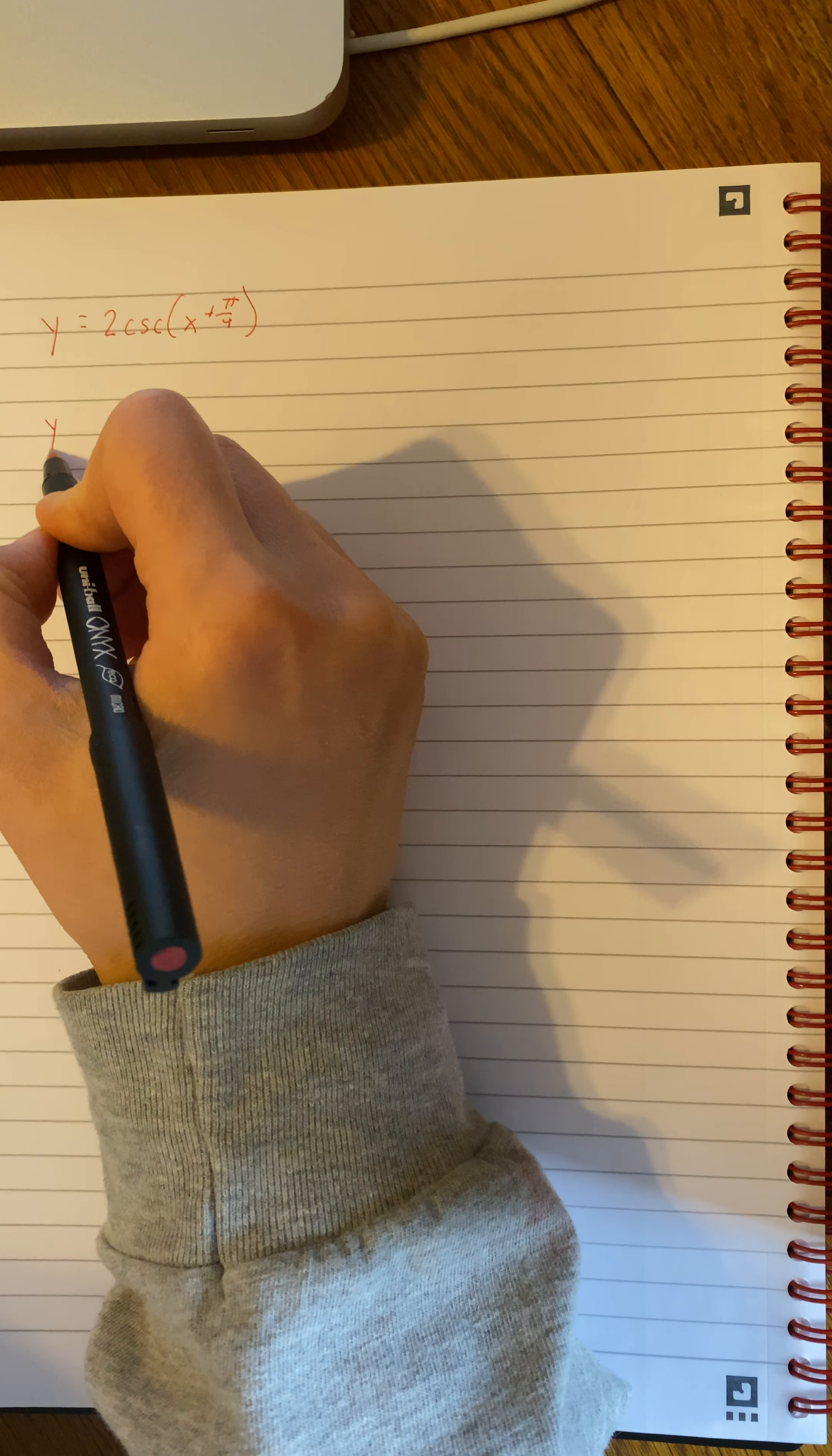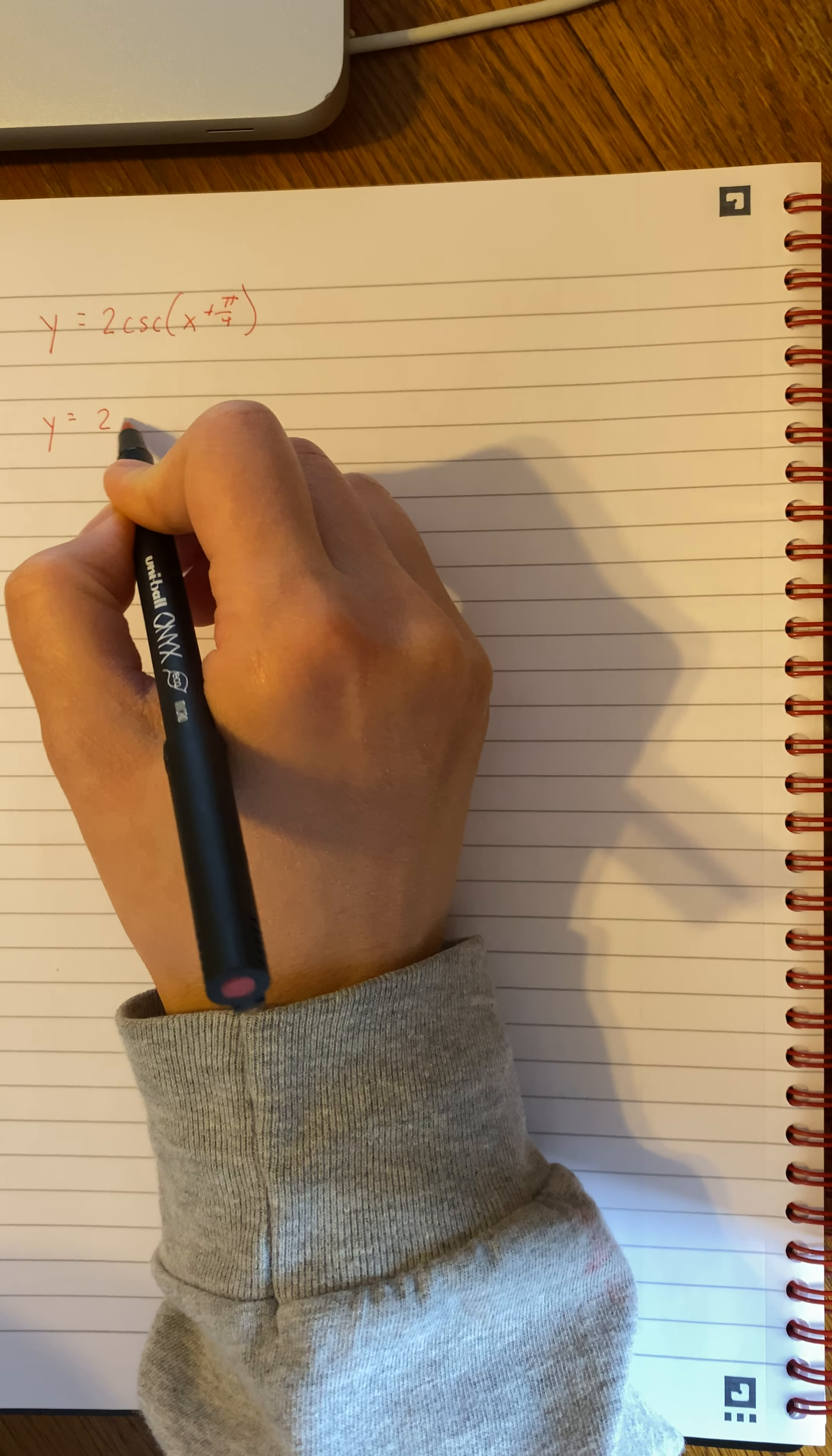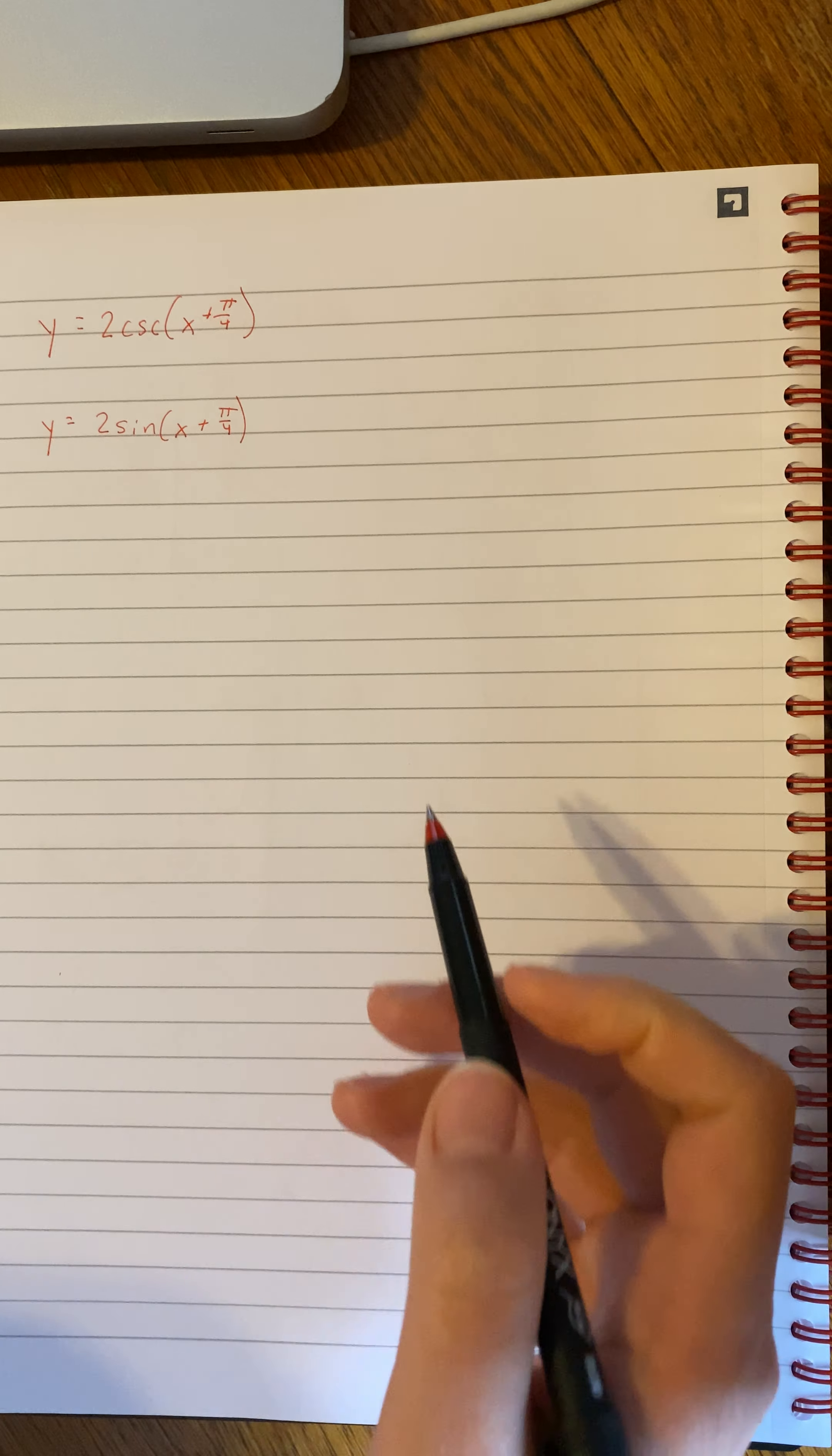So let's first think about what our sine graph is, and then we can do the cosecant. So y equals 2 times the sine of x plus pi over 4. Now it's something that looks familiar to us. We had a quiz on this.